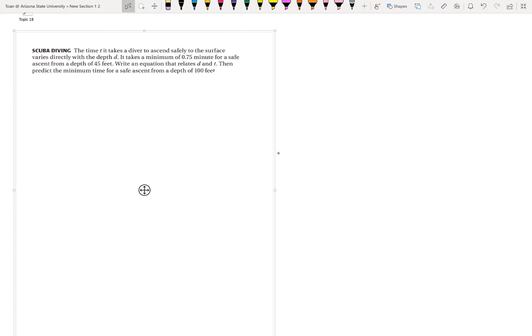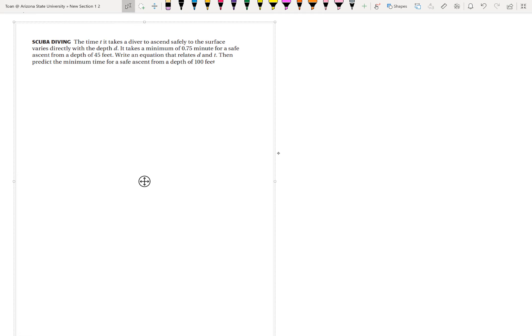So topic 18 is all about direct variations. Two things can relate to each other in any ordinary way, but direct variation is something special. So here's the idea.